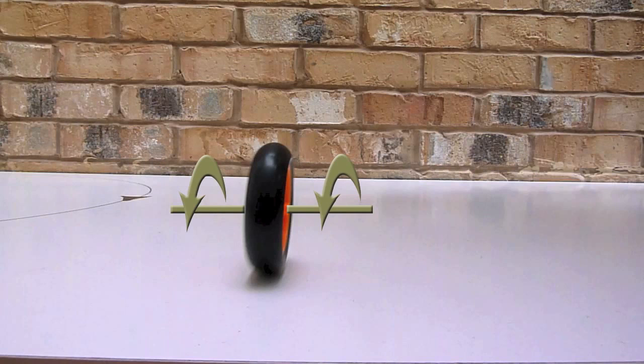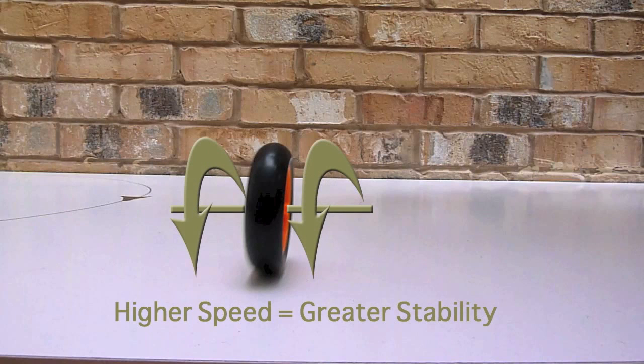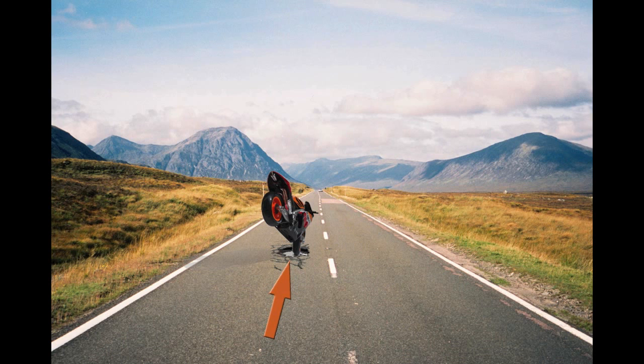At speed, your momentum is large, making the bike very stable in its upright position. If you just lean into the curve, the bike will respond too slowly.